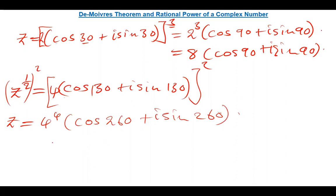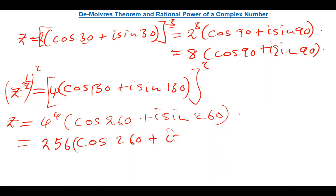When you raise 4 to the power 4, that gives 256. So the final answer is 256(cos 260° + i sin 260°). This is how you deal with powers of complex numbers.